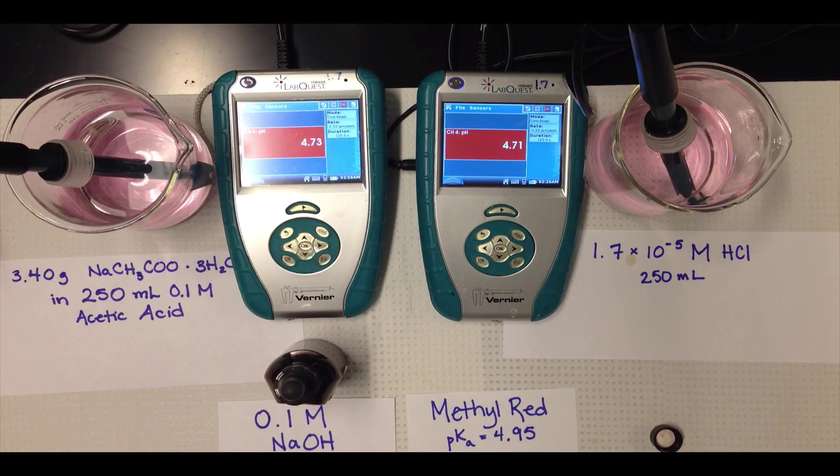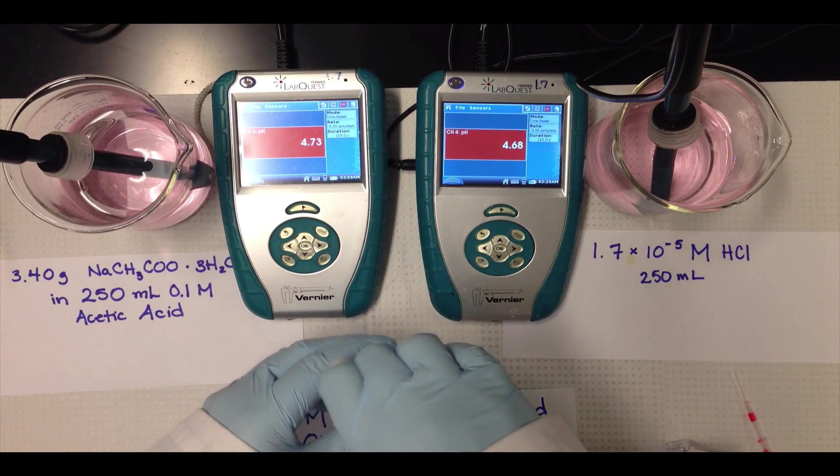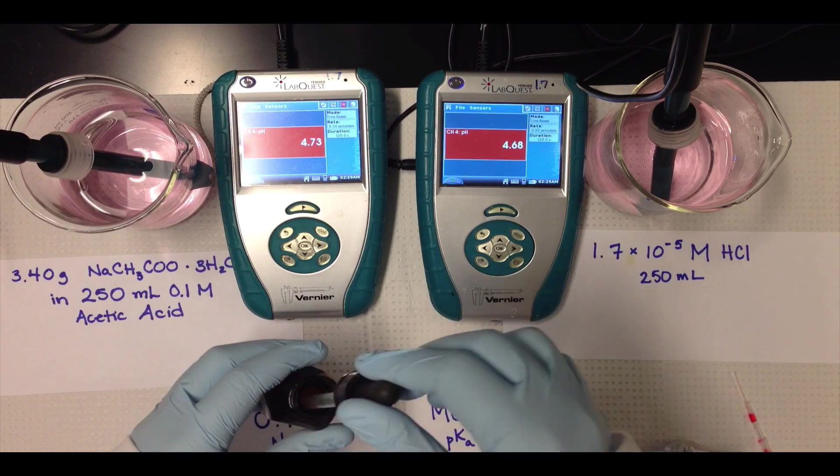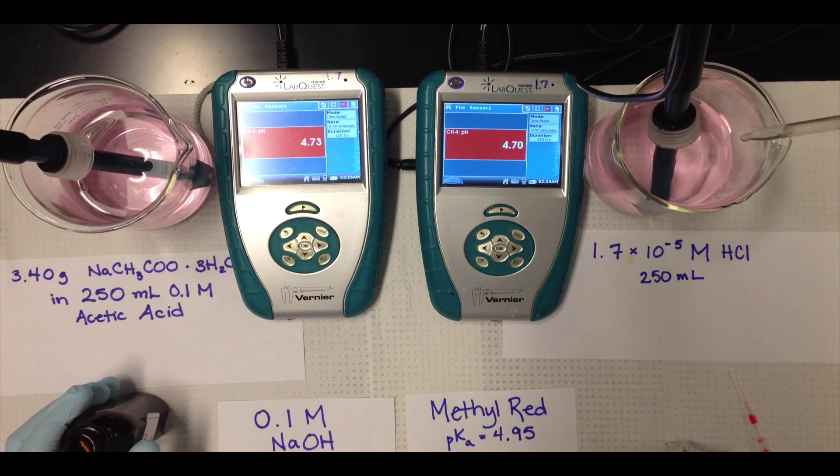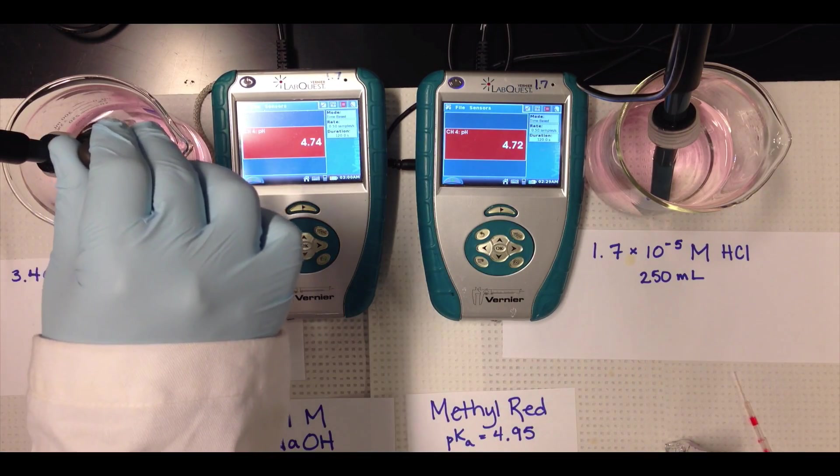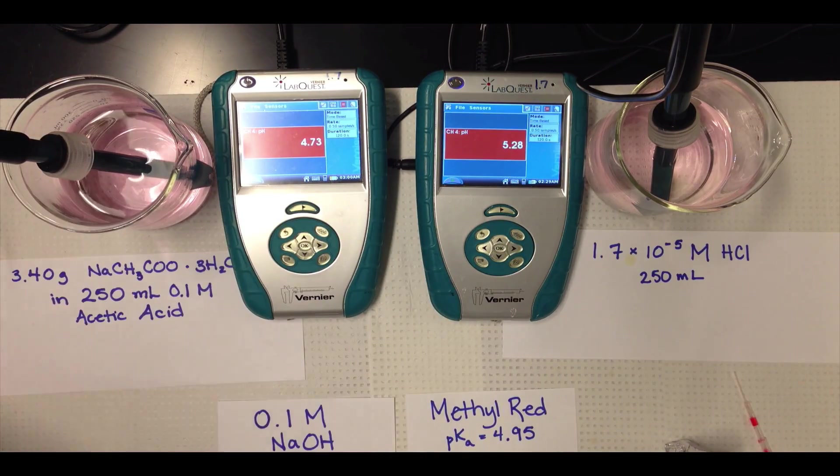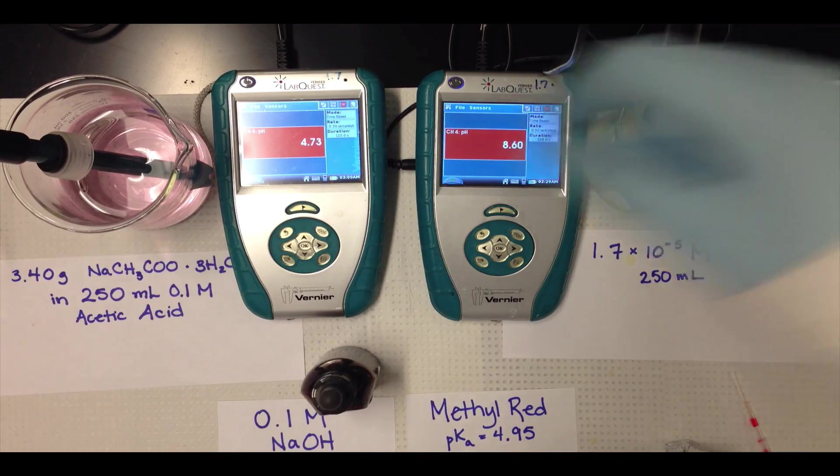And next, what we're going to do is add equal volumes of the 0.1 molar sodium hydroxide solution to each beaker. Sodium hydroxide is a strong base, so the pH of the solutions should go up. We add 10 drops of that solution to the right-hand hydrochloric acid solution, which is approximately half a milliliter, and we add that same number of drops to the buffer solution on the left.